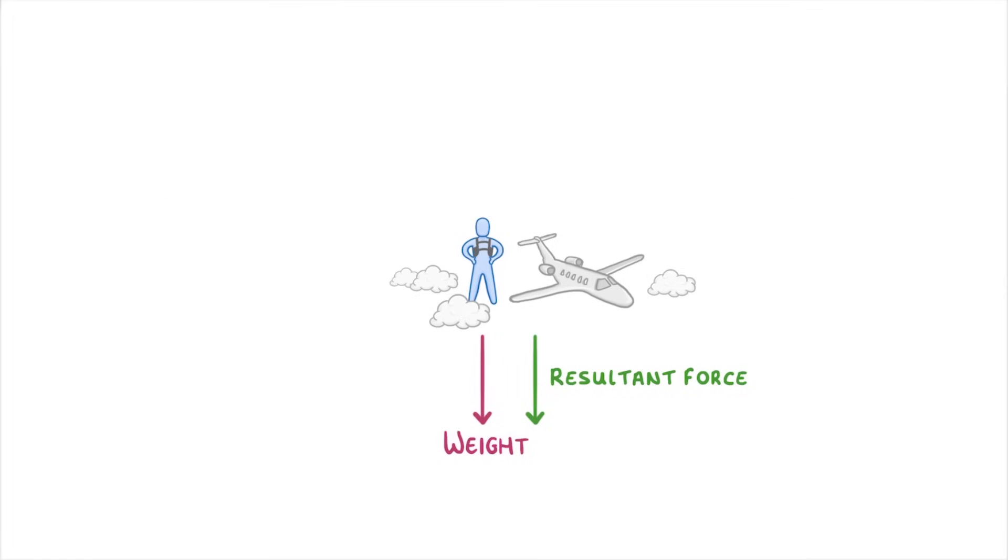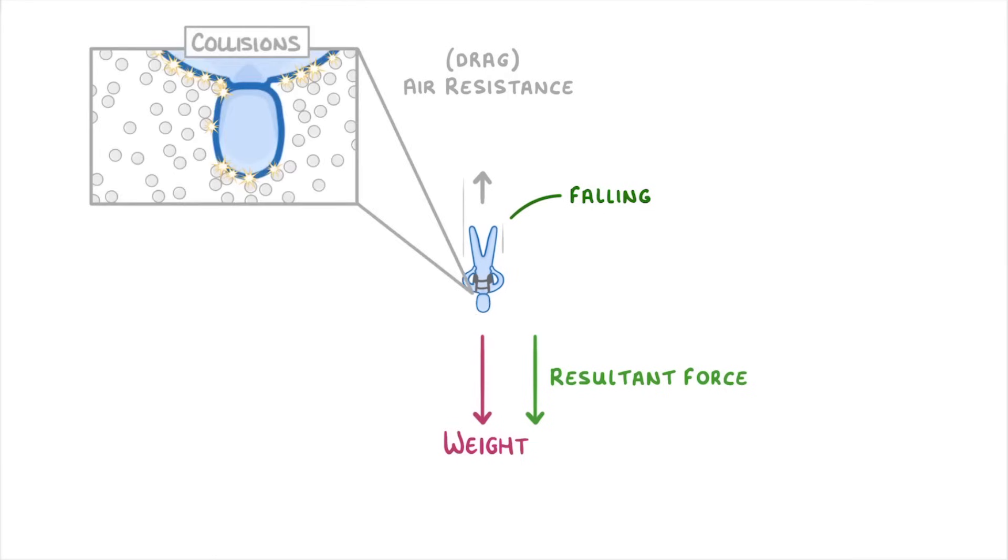As soon as the person starts falling though, they'll encounter air resistance, which will be an upwards force that acts in opposition to the weight. The air resistance, which is sometimes called a drag, is due to the collisions between the person and all the tiny air particles that make up the air.